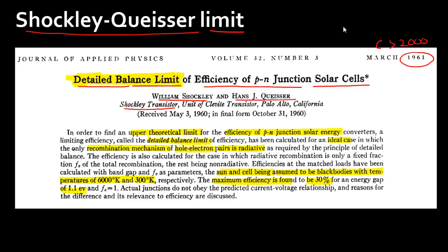This paper was published in 1961. The first good solar cell demonstrated by Bell Labs was in 1954, with an efficiency of around 6%. Cells being reported around that period still had efficiencies of 9 to 10%. Yet this audacious paper from Shockley and Queisser claimed these cells could go up to 30% efficiency.